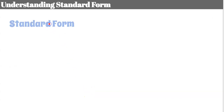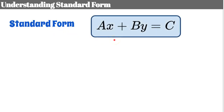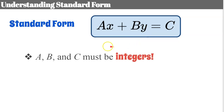Let's talk about understanding standard form. Standard form is a linear equation written in the form ax plus by equals c. This is one of the few times you'll see uppercase A, B, and C, which is different than lowercase a, b, or c. A, B, and C must be integers — meaning they cannot be fractions or decimals.